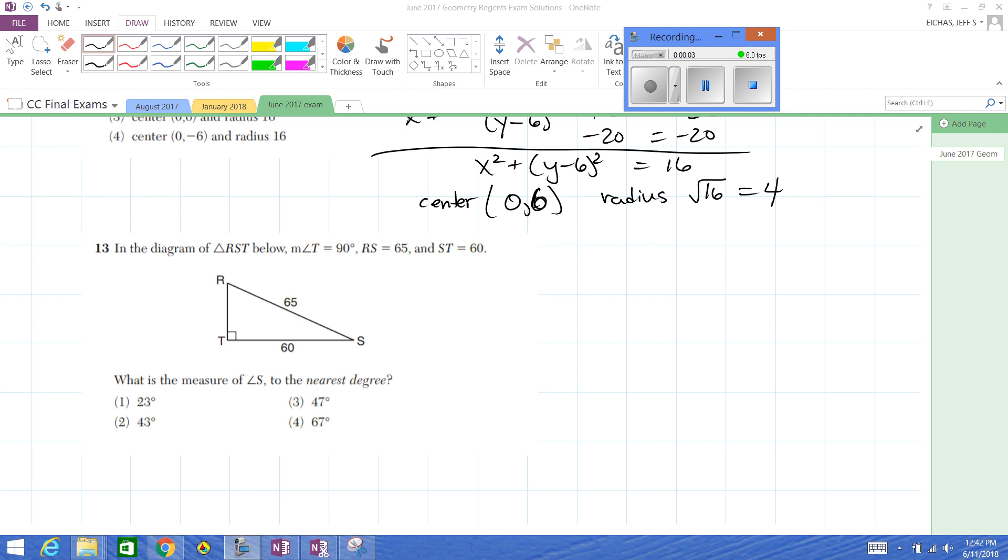So, more on the June 2017 exam solutions. A great problem here is number 13. What we're going to have to use is the inverse trig functions to give us the angle measure that we can expect will give us the ratio of the two sides we have.